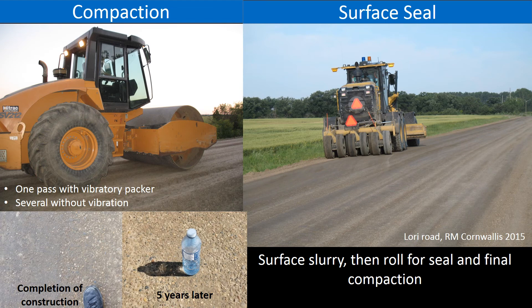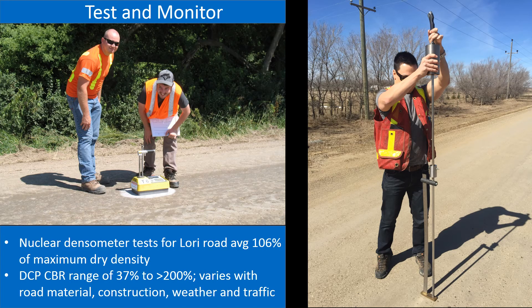The photographs at the lower left show a road surface upon completion and again five years later. After stabilization, the roads are tested and monitored. Nuclear densometer tests show that maximum dry densities are routinely achieved. The dynamic cone penetrometer is used to determine the California Bearing Ratio. In the 15 kilometers of road constructed in the Brandon area, the CBR ranged from 37% to greater than 200%, varying with the road material used, construction methodology, weather, and traffic conditions.